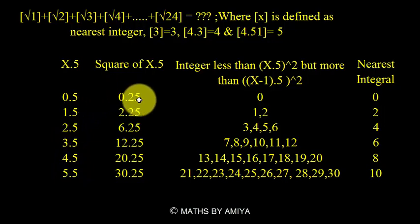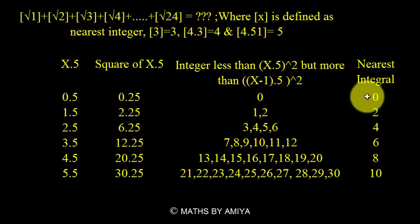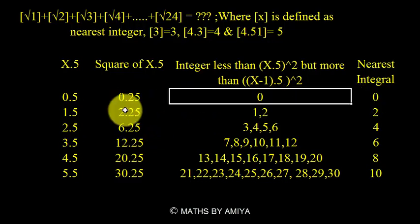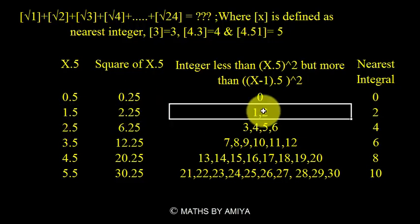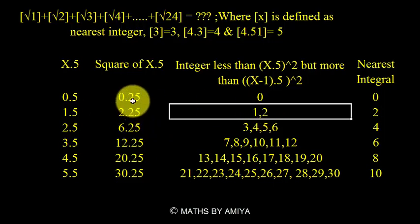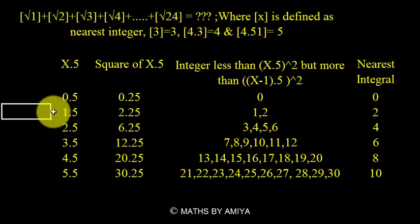The squares of these values are 0.25, 2.25, 6.25, 12.25, 20.25, and 30.25. How many integers are less than 0.25? Zero — so no nearest integer values there. For 1.5, the square is 2.25, and the integers 1 and 2 lie between 0.25 and 2.25. So the square root of both 1 and 2 gives a nearest integer of 1.